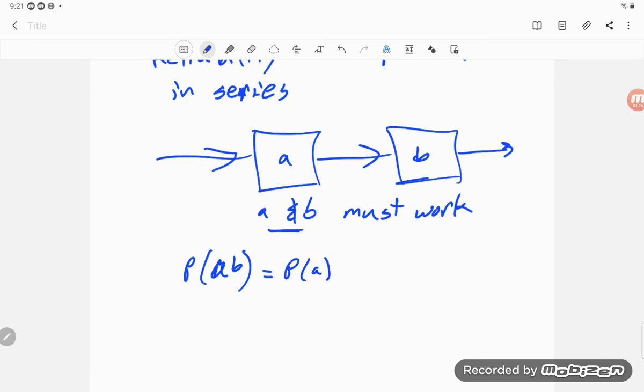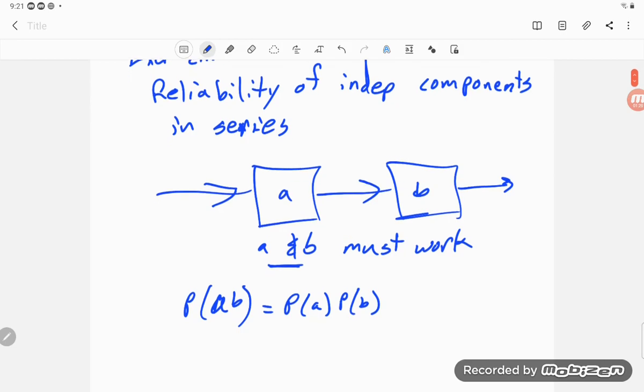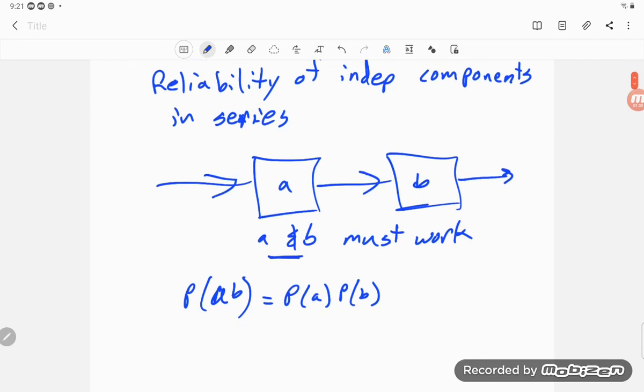Since they're independent, that's the probability of A times the probability of B. And if I add more things in series, it just keeps growing that same way. Thank you.